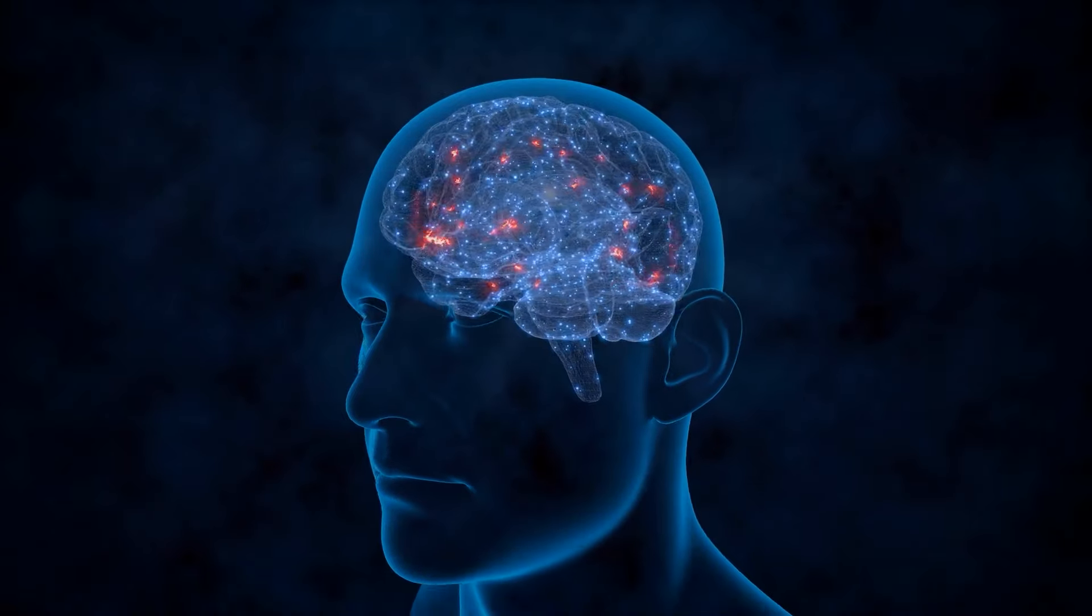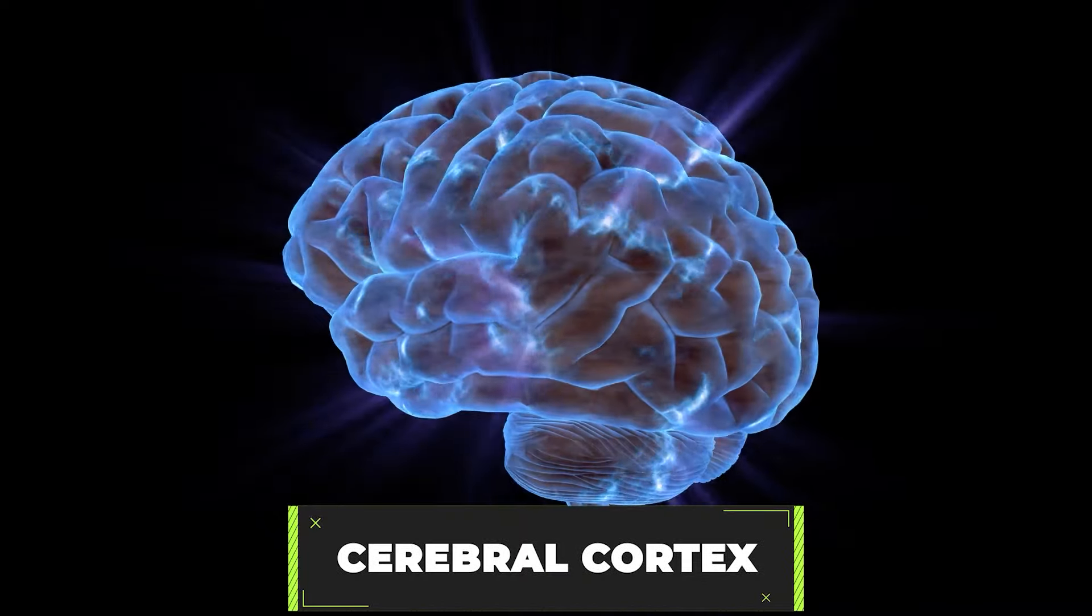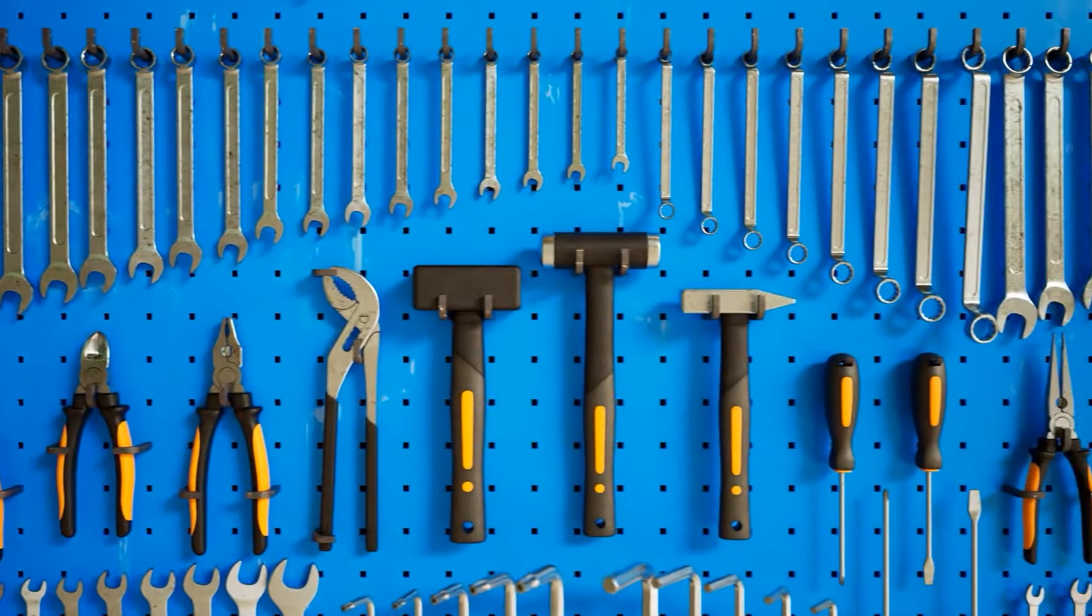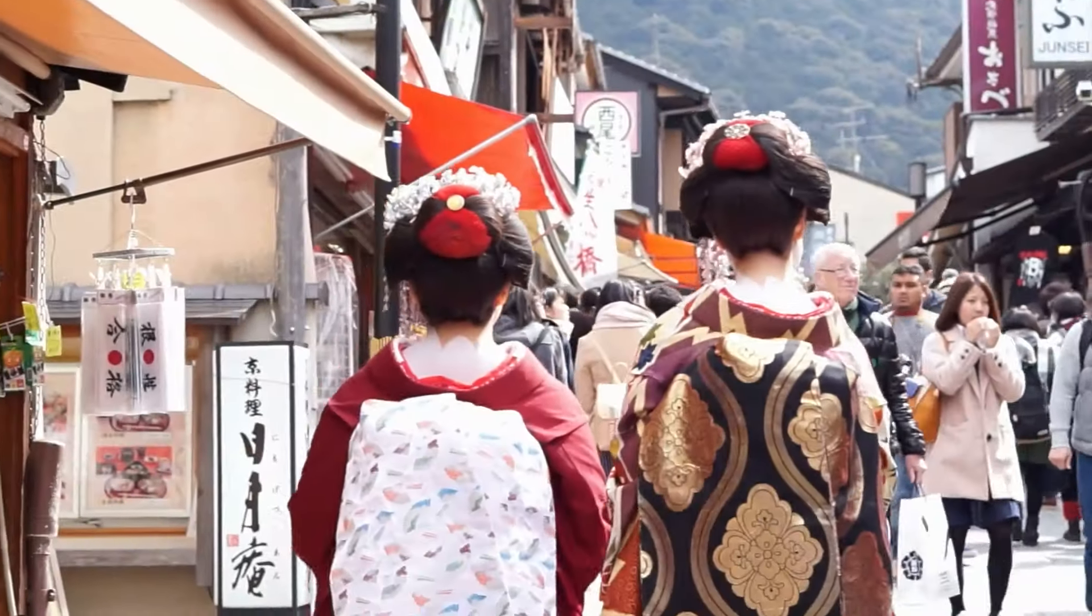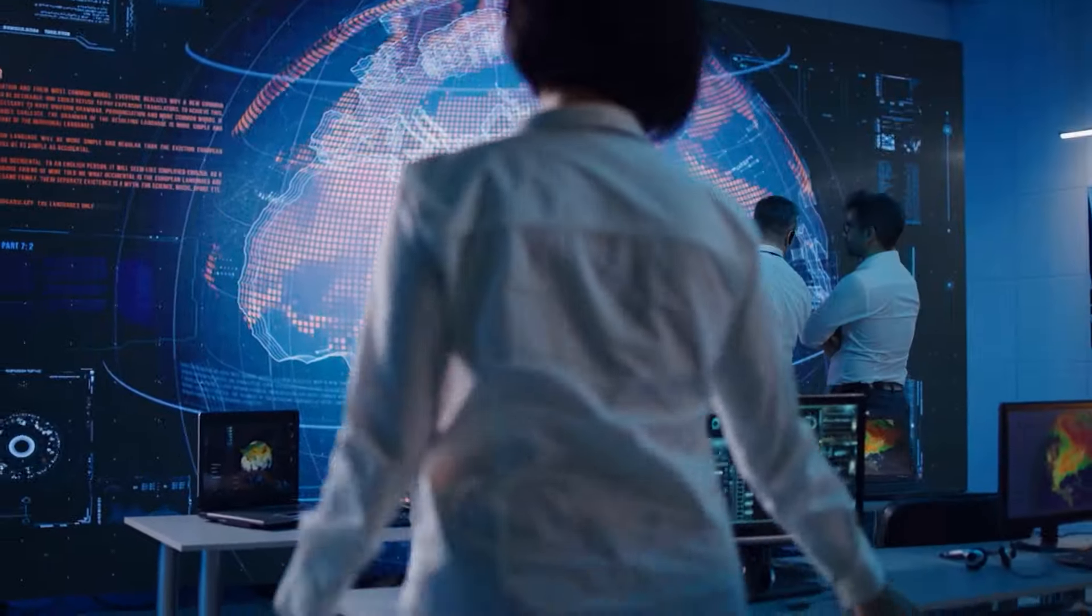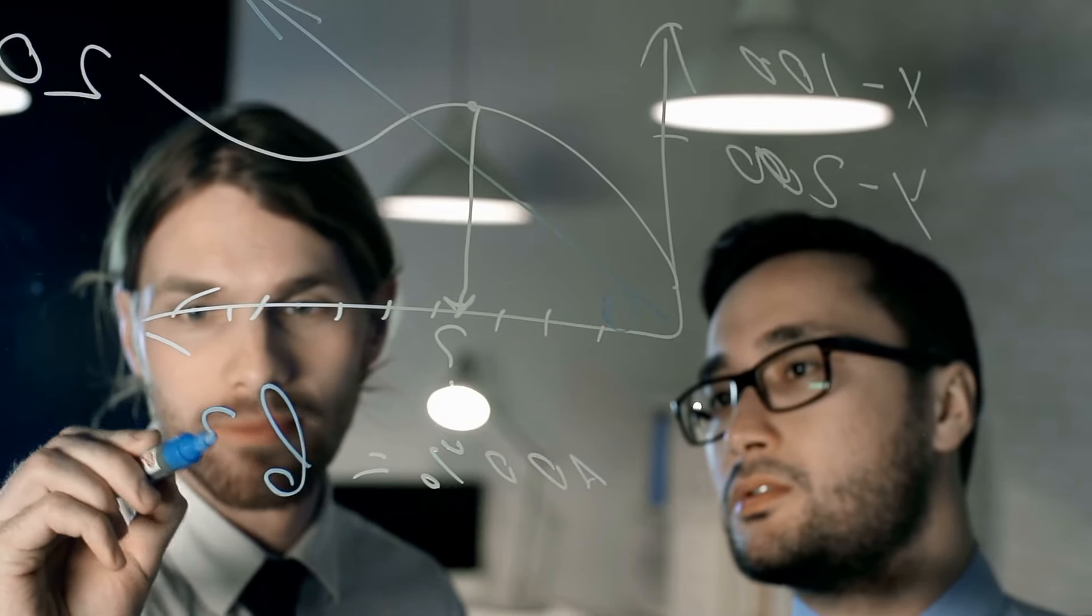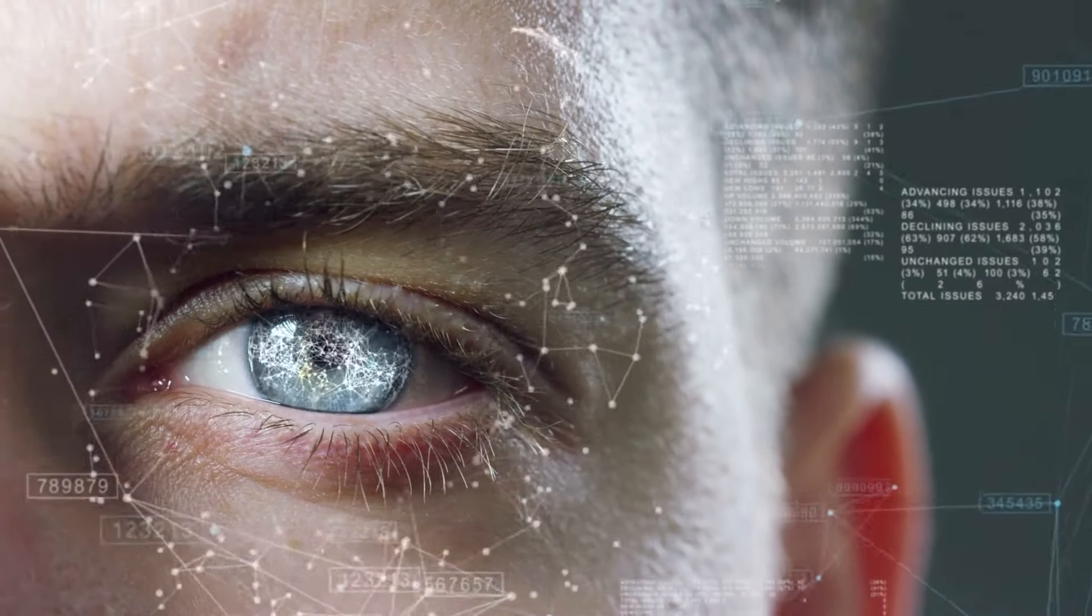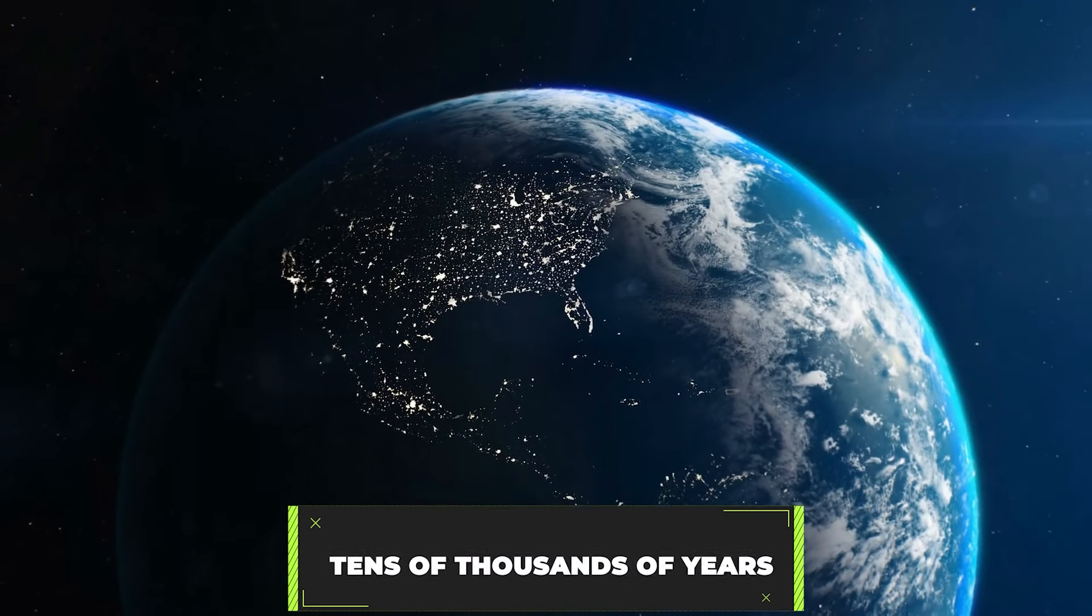In the third epoch, the advent of the human brain represented a significant leap in complexity. The development of the cerebral cortex enabled abstract thought, language, and the ability to create tools. This epoch saw the rise of human civilization, characterized by the development of culture, art, science, and technology. The human brain's ability to process information and solve problems marked a critical turning point.